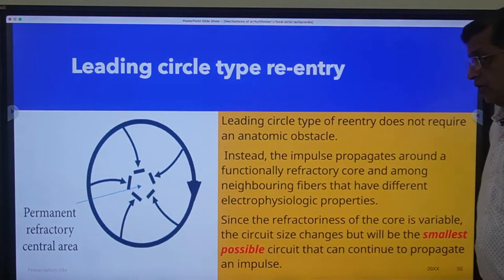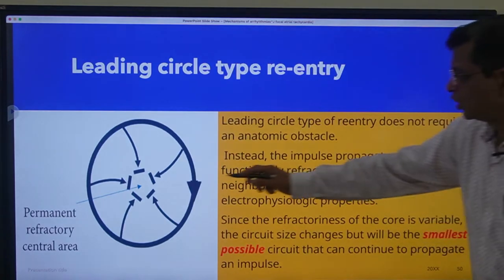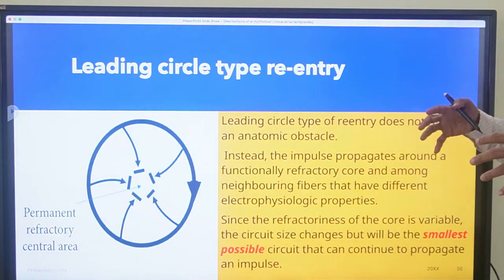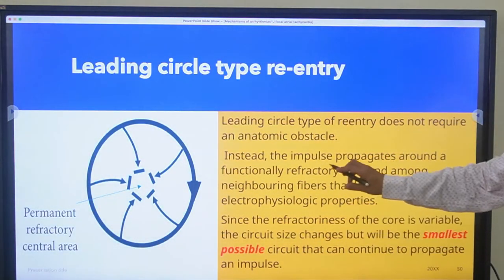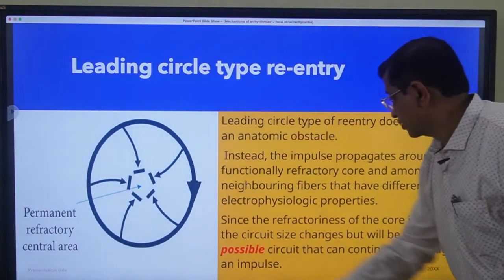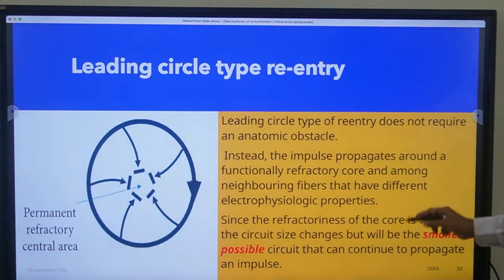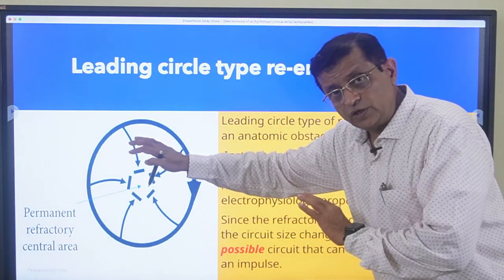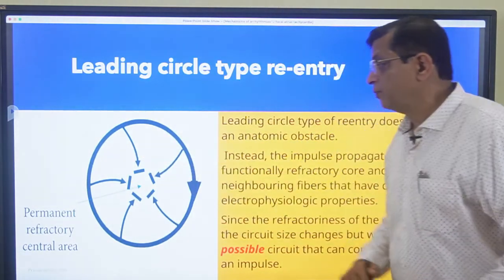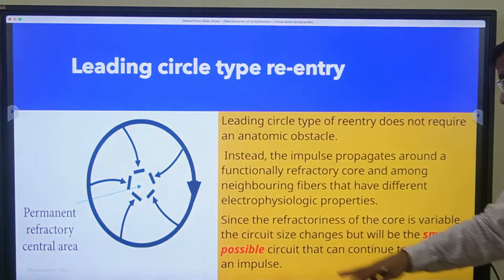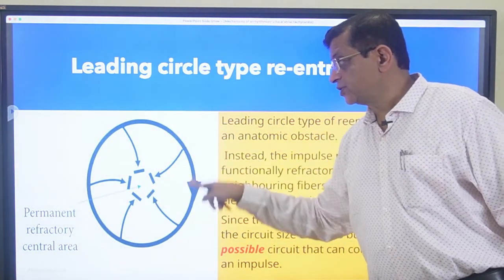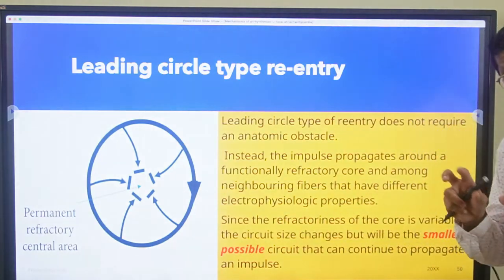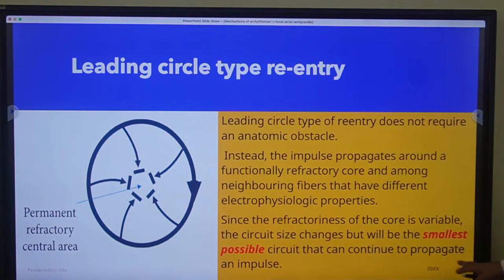The second is the leading circle type re-entry. In this type there is a central core tissue which is permanently refractory, and all the depolarization is going from the periphery to the center. The impulse propagates around a functionally refractory core among neighboring fibers that have different electrophysiological properties, continuously sending depolarization waves towards the core. Since the refractoriness of the core is variable, the circuit size changes continuously - but it will form the smallest possible circuit that can continue to propagate. This is the leading circle type re-entry.